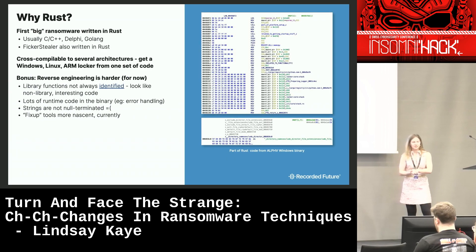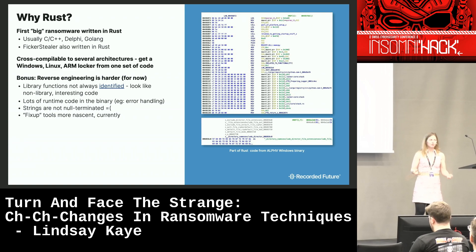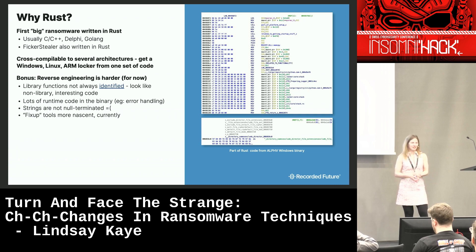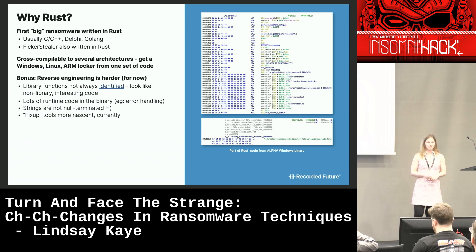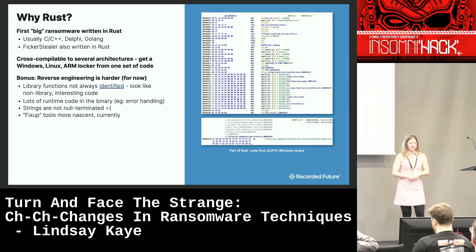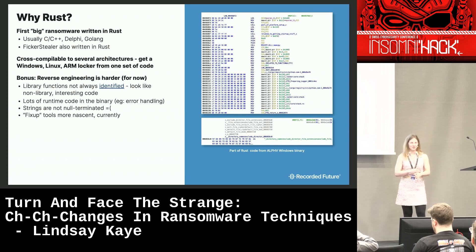Alpha is the first big ransomware written in Rust. Previously we generally saw C/C++, sometimes Delphi, and lately often Golang. Part of the benefit of Rust is that it's cross-compilable — you write one set of code and can get Windows, Linux, and ARM locker out of it. As a bonus for the threat actors, reverse engineering was significantly more challenging. Library functions aren't always apparent as library functions and can look like in-code functions. And since Rust binaries are generally very large, finding the interesting code is more complicated than with C/C++.